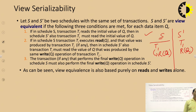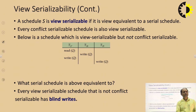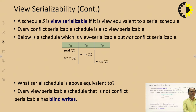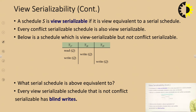View equivalence is basically purely dependent on read and write operations. A schedule is view serializable if it is view equivalent to a serial schedule. Every conflict serializable schedule is also view serializable. However, a view serializable schedule is not necessarily conflict serializable — it may or may not be conflict serializable.